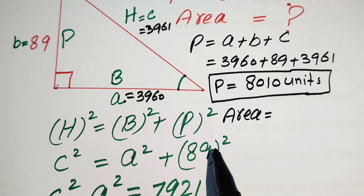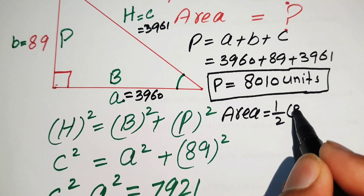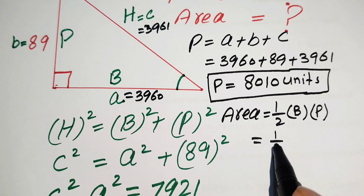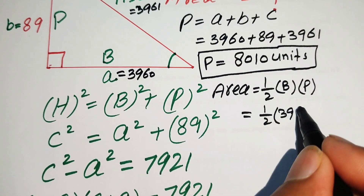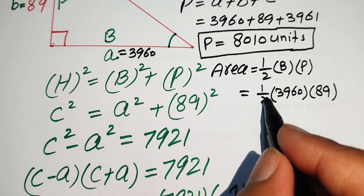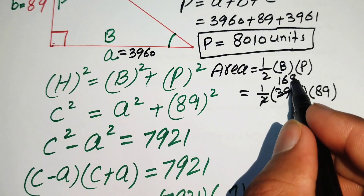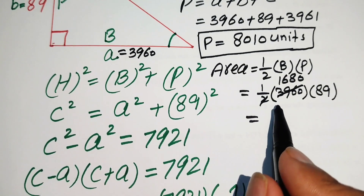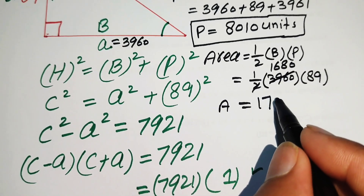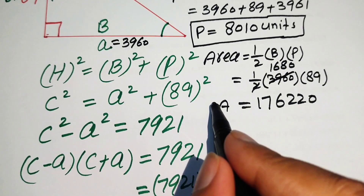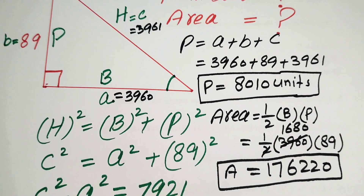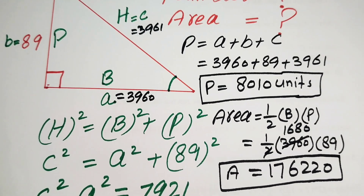Now we find the area. The formula for the area of a triangle is one-half times base times height, where height is the perpendicular. So area = ½ × 3960 × 89 = 176,220 square units. This is the area of the given right triangle. Thank you so much for watching this video — please subscribe to my channel for more exciting videos.